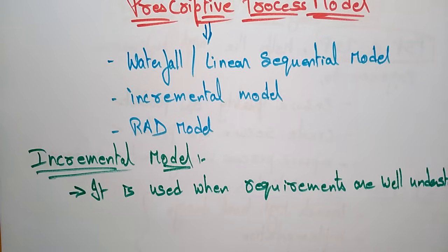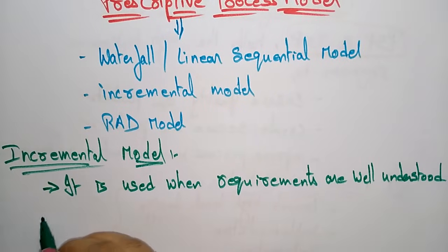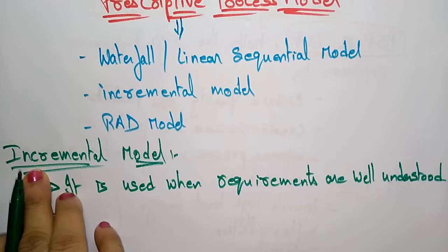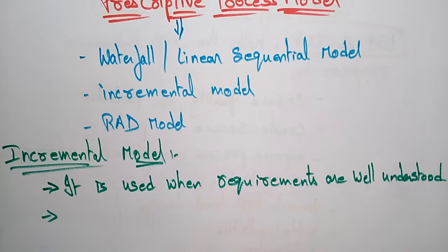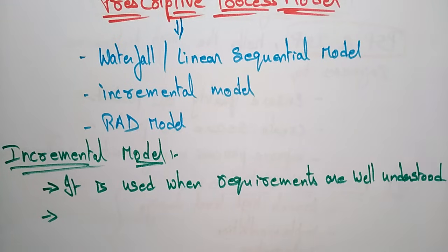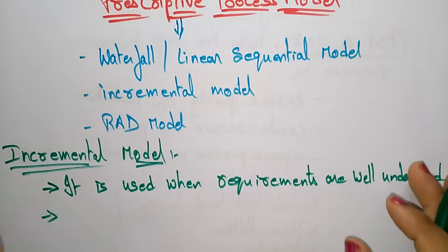The next point: multiple independent deliveries are identified in the incremental model. This means once one module is completed, the delivery for that module happens, and each delivery is independent of the others. These are small unit modules, and every module is delivered independently.